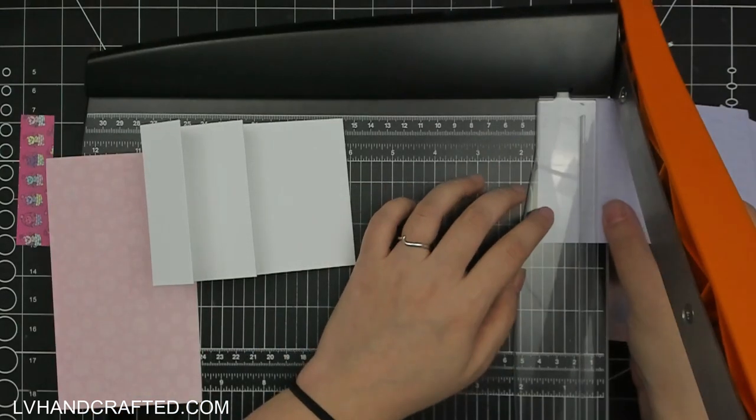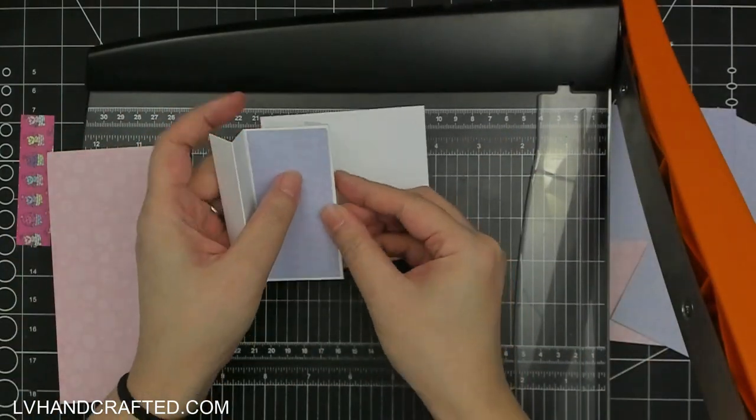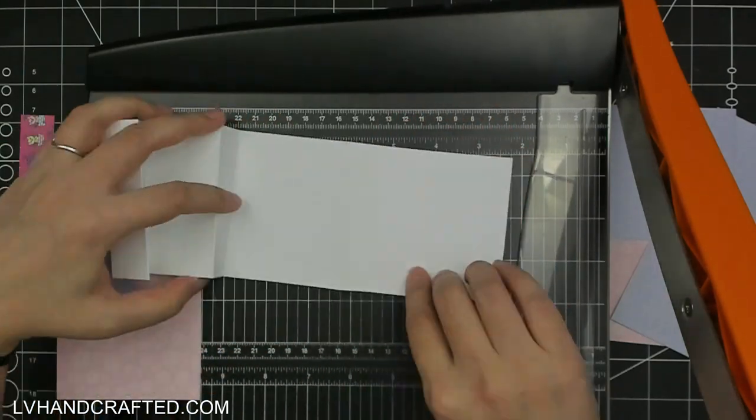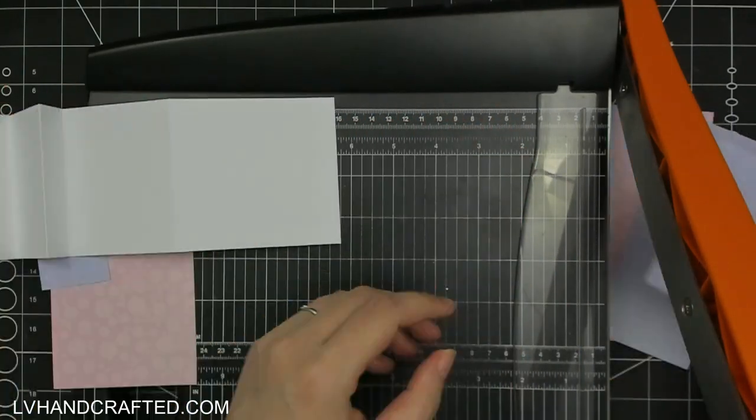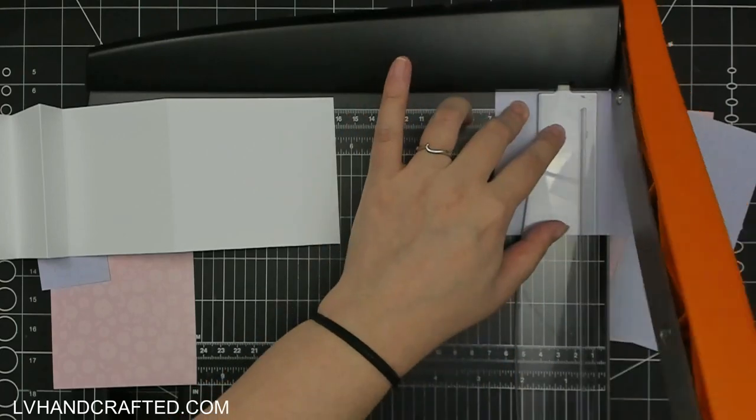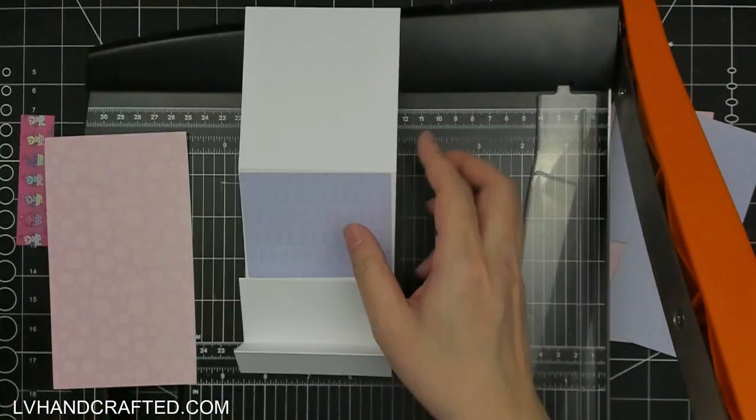So now with the base of the card basically complete, you can just go about cutting your mats and layers and decorating your stepper.